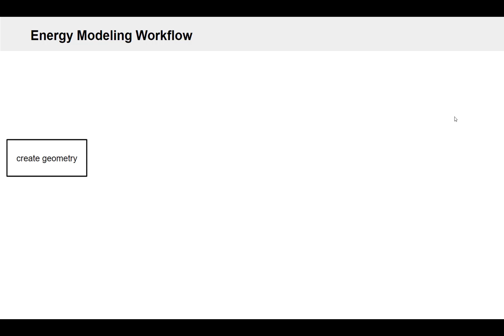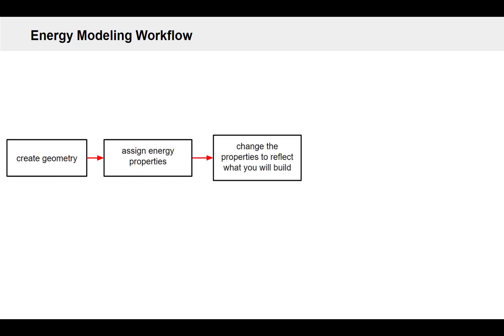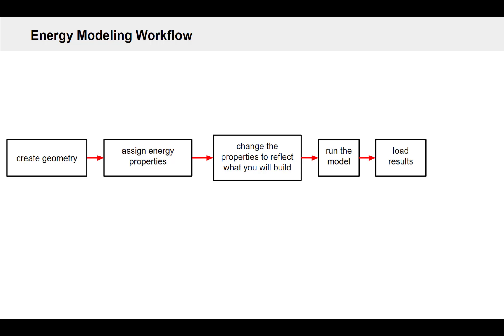I'm going to start by explaining this idealized energy modeling workflow that all of us usually have in our heads before we actually start to learn energy modeling. This idealized workflow usually goes something like this: we're going to create our geometry for our building, get that ready and cleaned up to put into an energy model, assign some energy model properties to that geometry so it can actually be run, tweak some of those default properties so it's a reflection of what we'd build, then run that model and load the results. This is that idealized workflow — a single nice linear process.